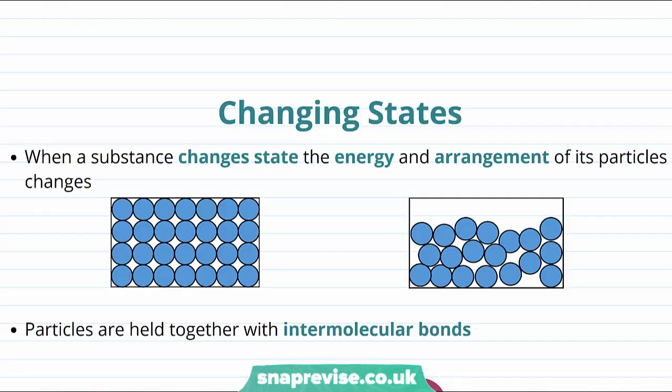Let's start by talking a bit more about changing states. When a substance changes state, the energy and arrangement of its particles changes. For example, when a solid changes to a liquid, the particles become more energetic and they're less strongly bonded to each other and less ordered.